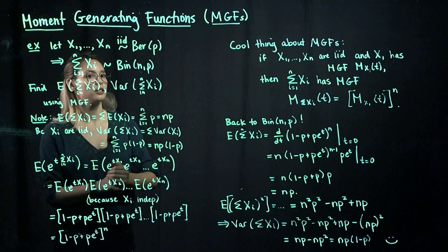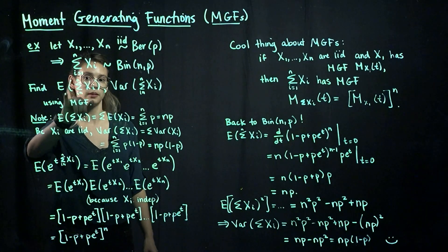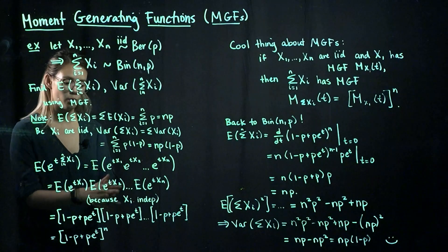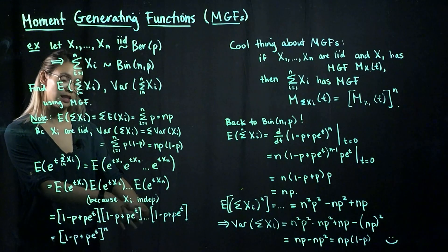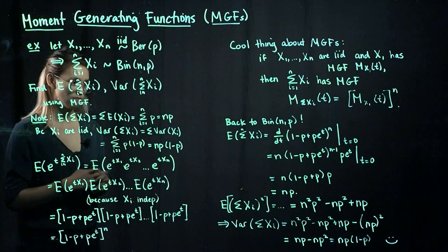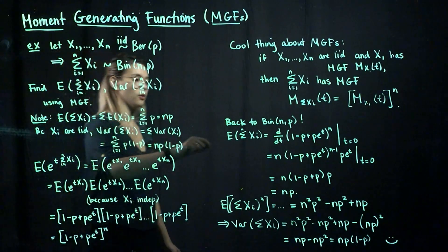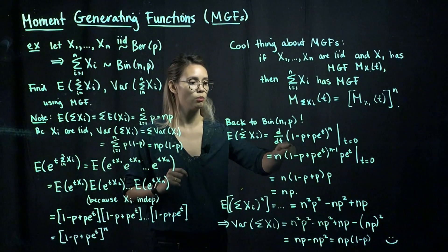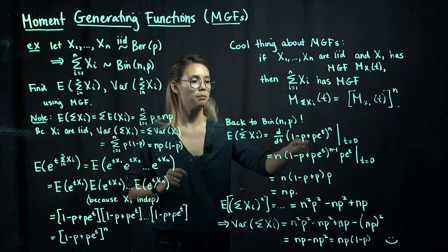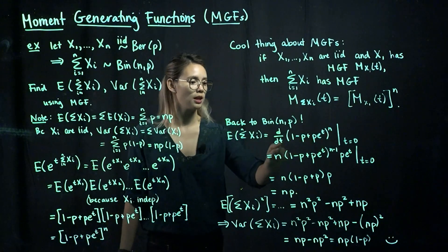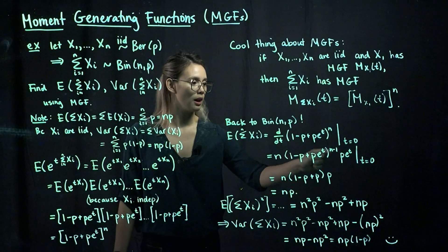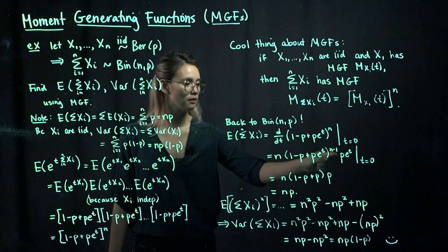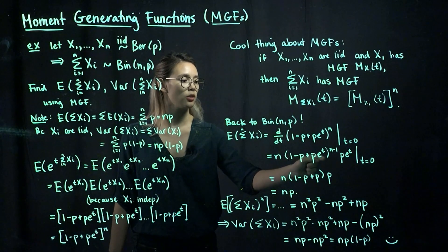Now let's go back to the binomial example and find the expected value and variance of the sum of Bernoulli random variables using MGFs. Once we have the MGF, we take derivatives with respect to t and evaluate at t equals 0. For the first moment, we take the first derivative of (1 minus p plus p e to the t) to the nth power with respect to t. Using the chain rule, n comes down in front, the exponent becomes n minus 1, and we multiply by the derivative of the inside, which is p e to the t.